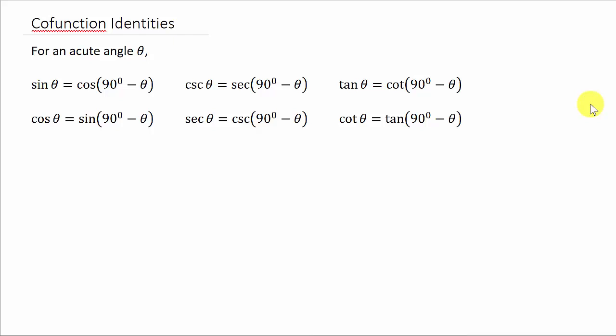Alright so this video we're going to look at cofunctions. Here's your cofunction identities. Sine theta is cosine 90 minus theta. Cosine theta is sine 90 minus theta and I'm not going to read them all to you. You can see them and these are in degrees.